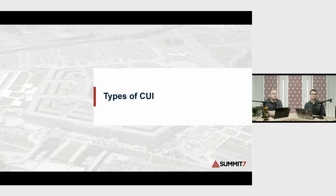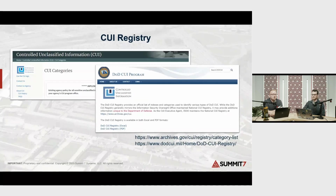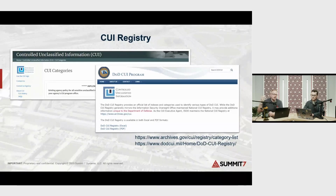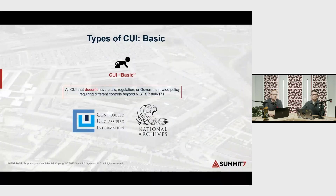That brings us into the types of CUI — a broad stroke here. Where we find this is the CUI registry. NARA, the National Archives, are the ones that actually hold the categories of what CUI is. The DoD has their own mirror site of that same information — the DoD CUI program site — but this is where you would start. Look up the categories, look up the safeguarding and dissemination requirements, and determine if the information you're receiving or creating is going to be CUI.